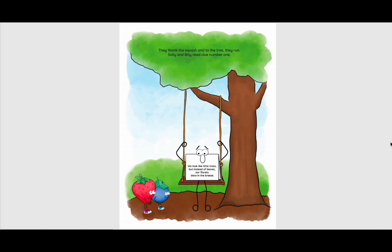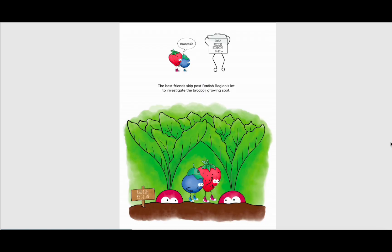They thank the squash, and to the tree they run. Sally and Billy read clue number one. We look like little trees, but instead of leaves, our florets blow in the breeze. Broccoli, correct, broccoli boondocks. The best friends skip past Radish Region's lot to investigate the broccoli growing spot.